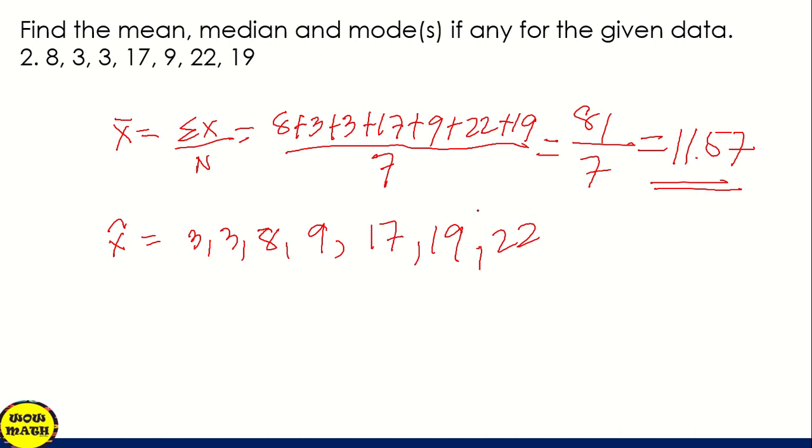So 1, 2, 3, 4, 5, 6, 7. Since odd number then, so we only have one middle data here. Our middle value. So, and that's the middle value is our median. So in this example, our median is 9. So the answer is 9.